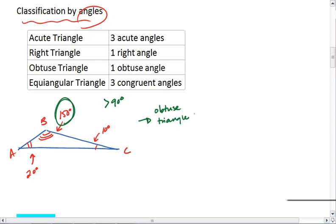I want you to take a moment and think about it, if it's possible to have a triangle that has two obtuse angles. So think about that for a moment, pause the video if you want to, and then restart it.